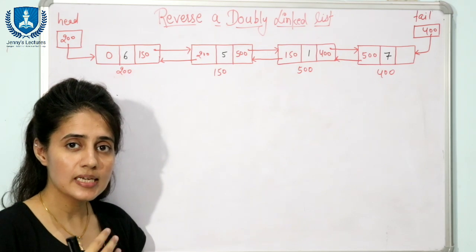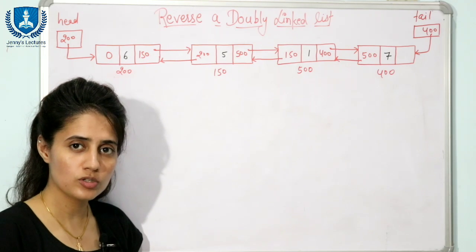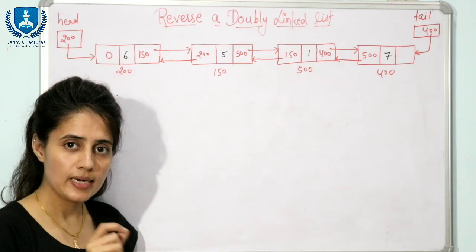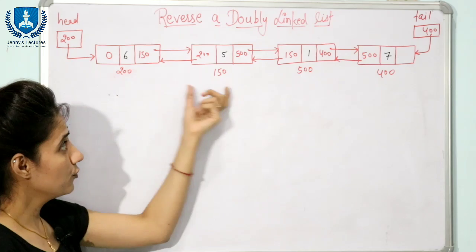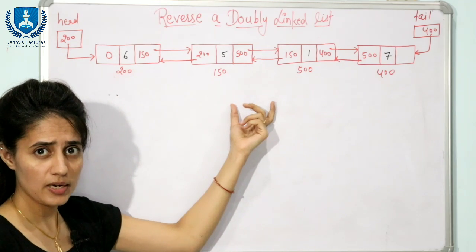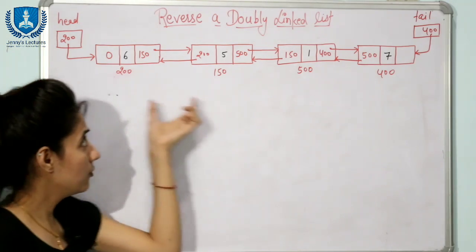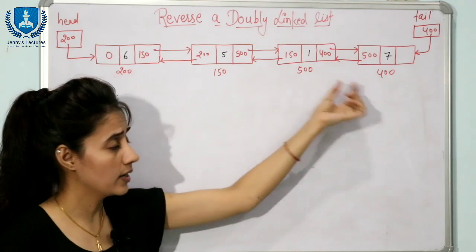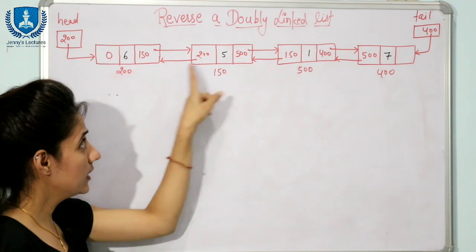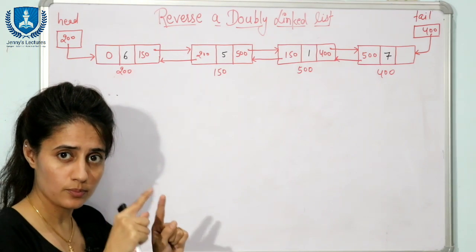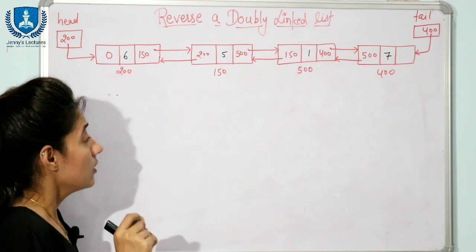We have discussed how to reverse a singly linked list — check out those videos, the link is in the description box. You can check out the complete series on linked lists in data structures there. Now, this is a doubly linked list with four nodes, and I want to reverse it. I'm not going to swap the nodes; instead, I'll just reverse the links — a process we already discussed for singly linked lists.